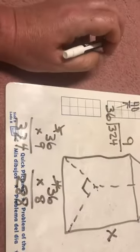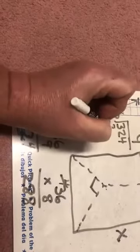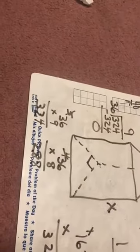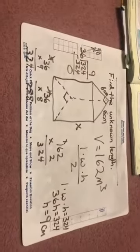So that tells me that 36 can go into 324 nine times. And I like the way that works because there is none left over, which means that h equals nine centimeters. And that's how we will solve those problems.